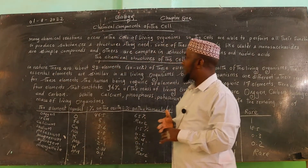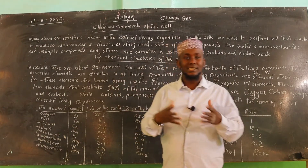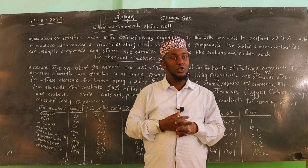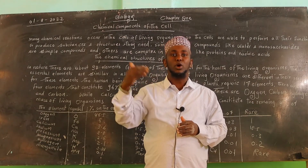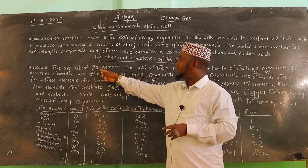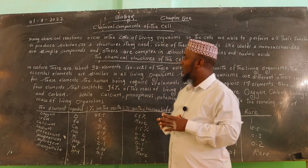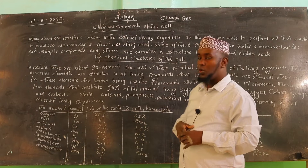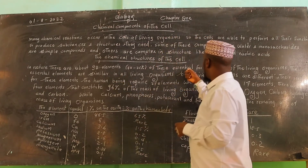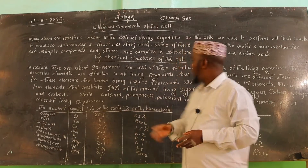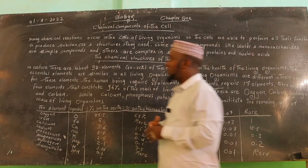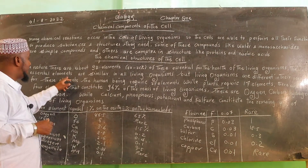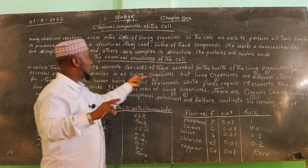In nature, there are about 92 elements found in the periodic table. Of these, the essential elements are required for the healthy functioning of living organisms. These essential elements are important to human life and are similar across living organisms.